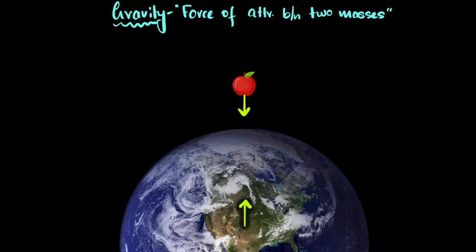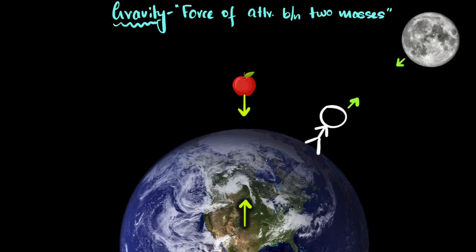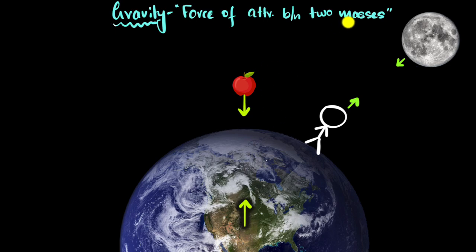This means, for example, you and the moon are also attracting each other because you both have masses. You and this apple are attracting each other, you and the Earth are attracting each other. Every two masses — any two masses in the universe — will attract each other because of their mass. That is the force of gravity.